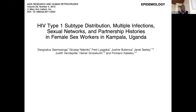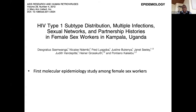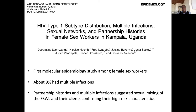I'll start with a study done by Dero Grisha Semwanga, in which he set out to determine HIV subtype distribution, multiple infections, and to investigate sexual network and partnership histories in female sex workers in Kampala. This was the first molecular epidemiological study among female sex workers. A major finding was that about 9% of the female sex workers had multiple infections, and the partnership histories and multiple infections really suggested sexual mixing of the female sex workers and their clients, confirming their high-risk behavioral characteristics.